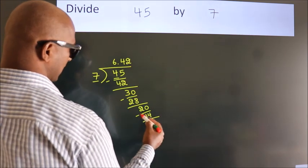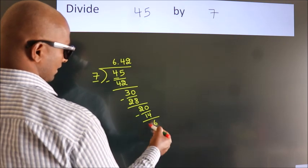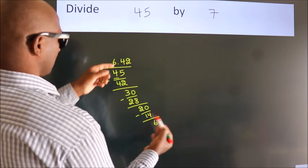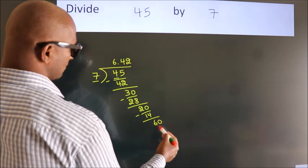Now we subtract. We get 6. After this, we already have the decimal. So directly take 0. So 60.